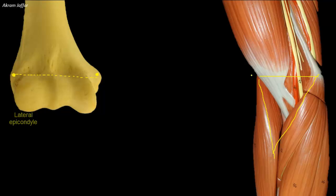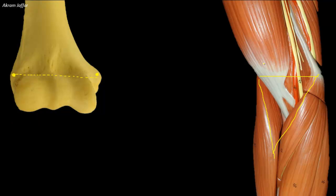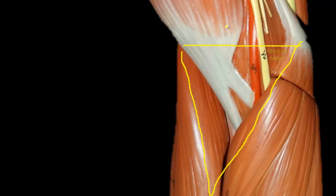The cubital fossa contains the following structures, enumerated from medial to lateral: the median nerve, the brachial artery — which will bifurcate in the fossa into its two terminal branches, the radial and ulnar arteries — then the tendon of biceps brachii muscle, and lateral to that is the radial nerve and its deep branch, which are not shown in this specimen.